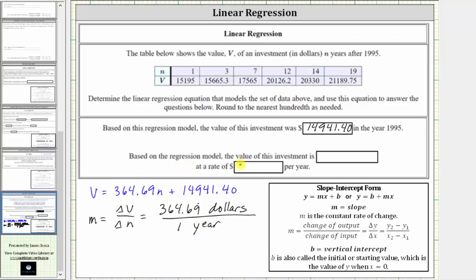So again, based upon the regression model, the value of this investment is increasing, because the slope is positive, at a rate of 364.69 dollars per year. I hope you found this helpful.